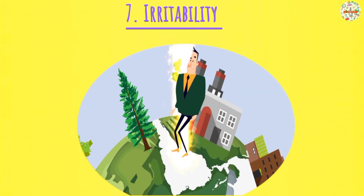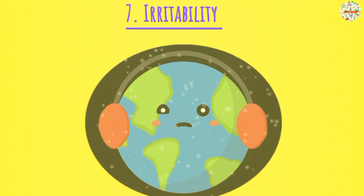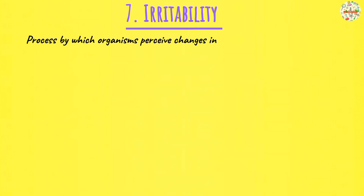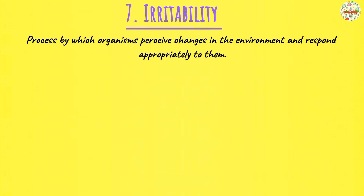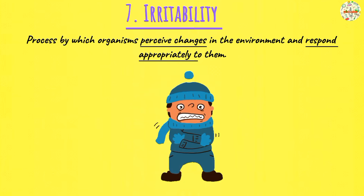Irritability. As living organisms, we are exposed to an environment that continuously changes — you have low temperatures today, high temperatures tomorrow, and so on. So we need to detect when these changes occur in our environment and then know how to respond appropriately. This is what irritability is: the ability of living things to detect changes in the environment and respond to them appropriately. For example, if temperatures are low, you as a human would find somewhere warm to stay, close up windows and doors, and put on warm clothes.